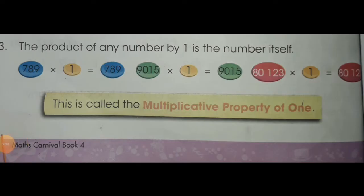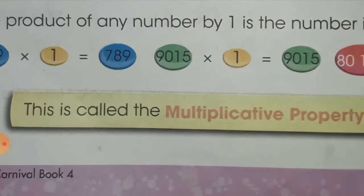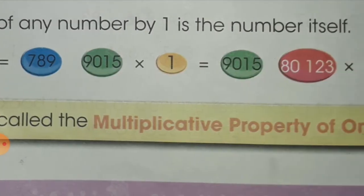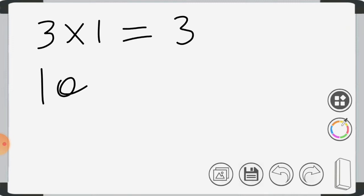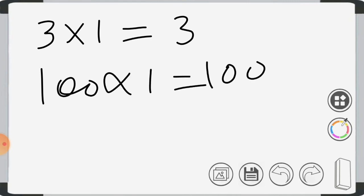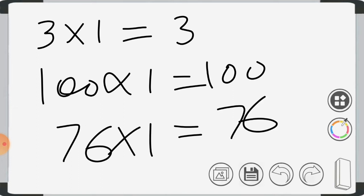Third property of multiplication: the product of any number multiplied by 1 is the number itself. Here you can see: 789 times 1 equals 789. Two other numbers are also given. This is called the multiplicative property of 1, and the other name is the identity property. For example, 3 times 1 is 3; 100 times 1 is 100; 76 times 1 is 76. This property is called the multiplicative property of 1 or identity property of multiplication.